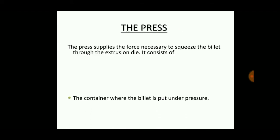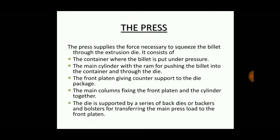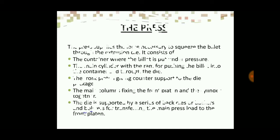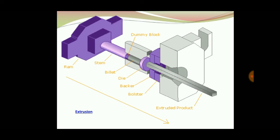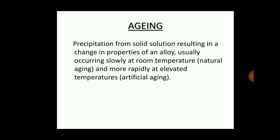A press is used to compress and force the billet toward the die under high pressure. The main columns fix the front platen and cylinder together, and the die is supported by a series of back dies or backers which transfer the main press load to the front platen. The billet, die, ram, dummy block, and bolster backer all work together to support the extruded product.